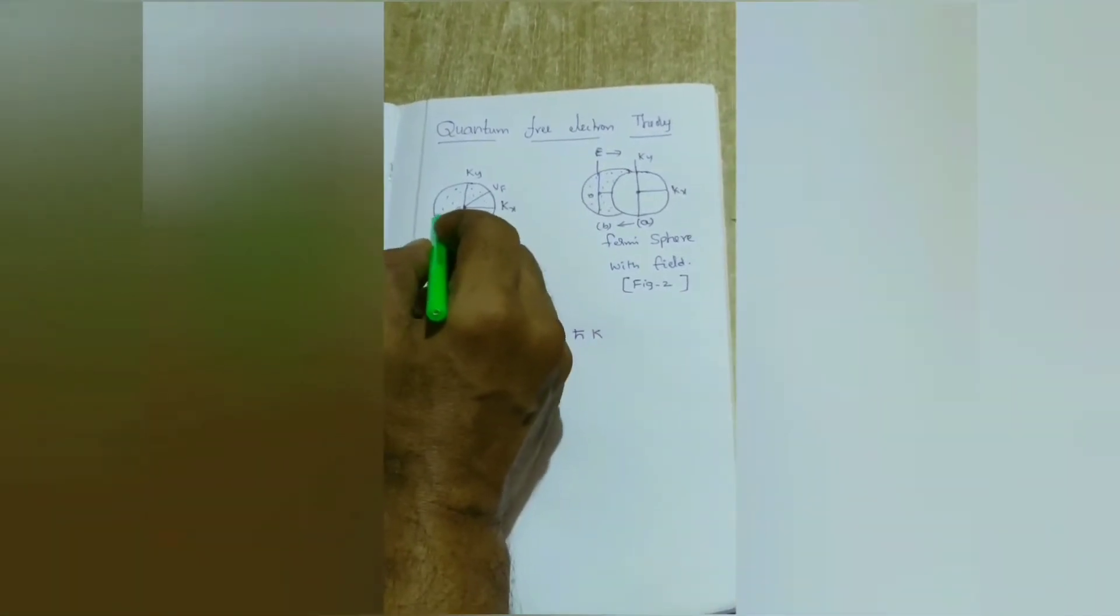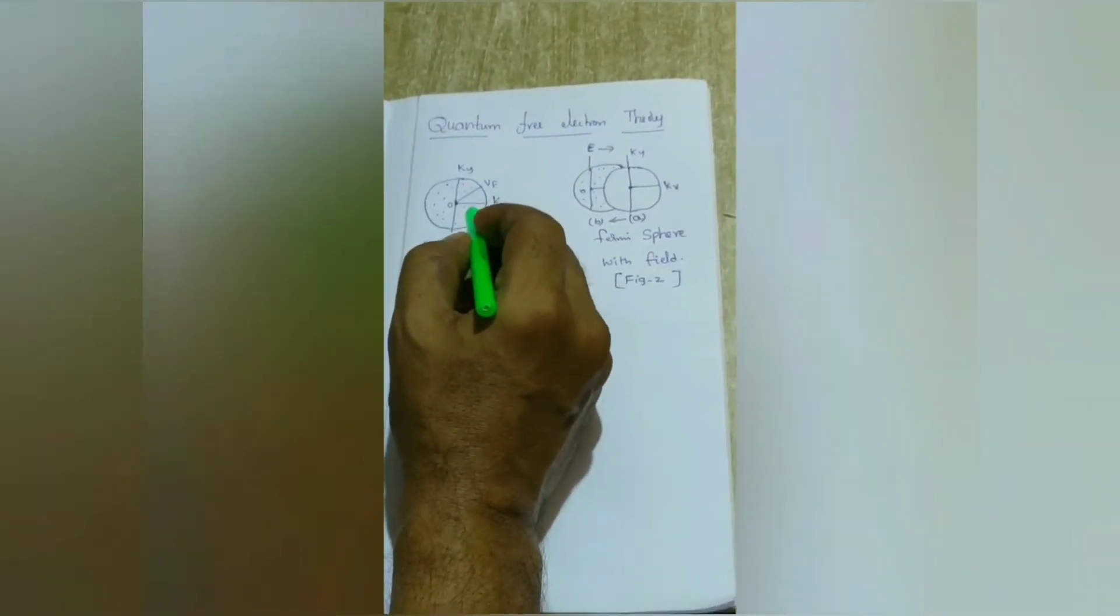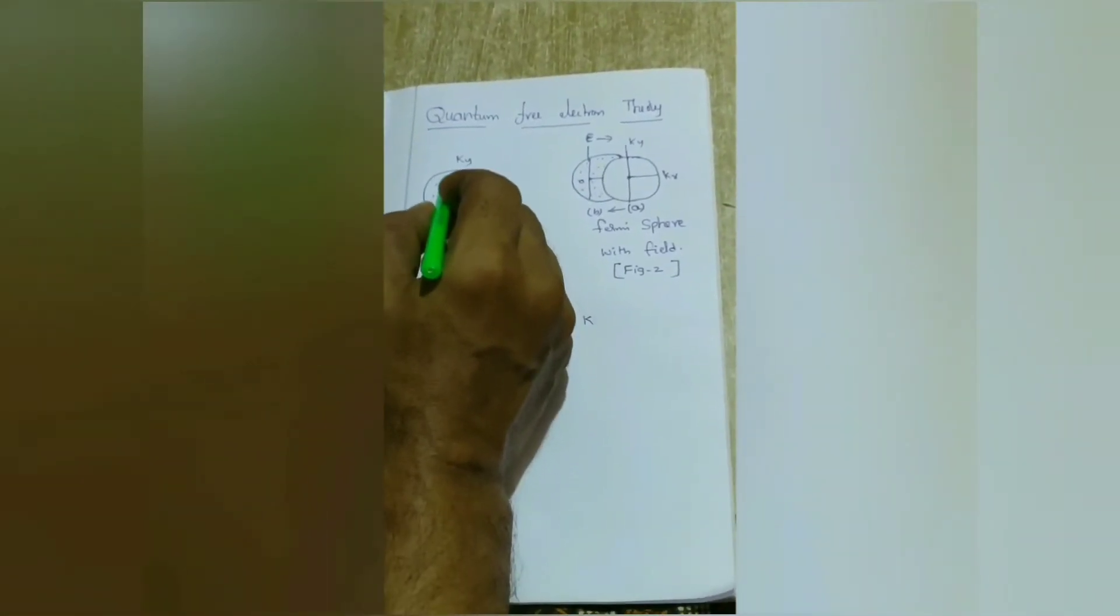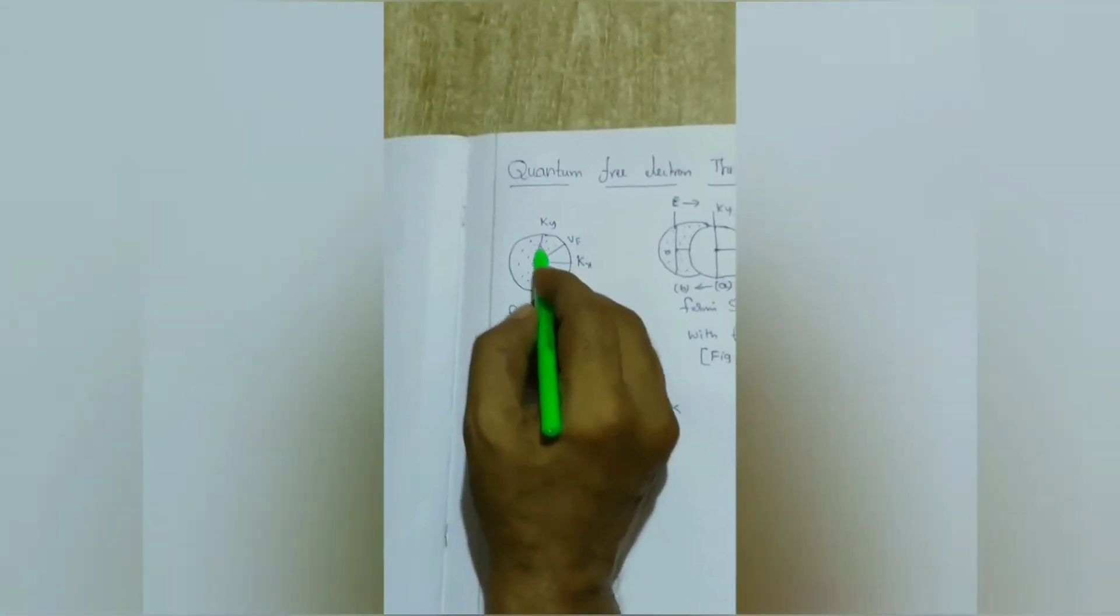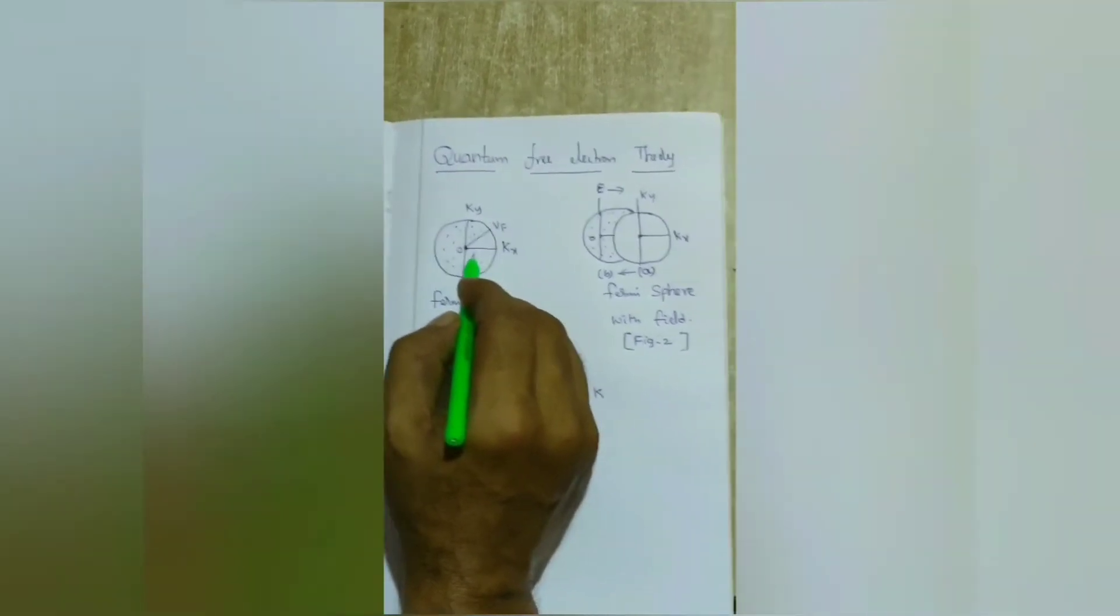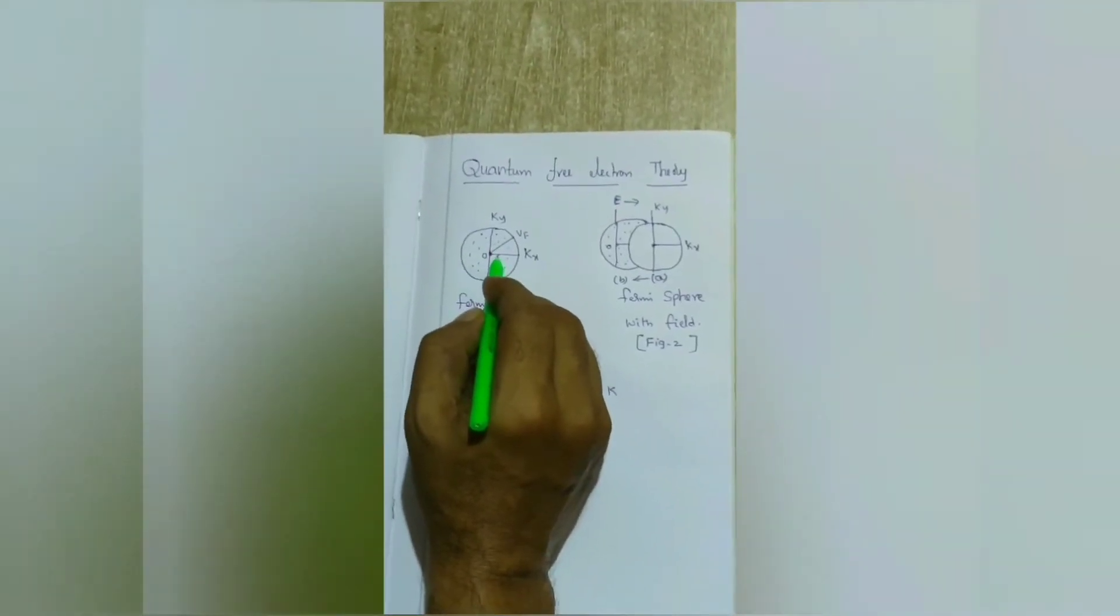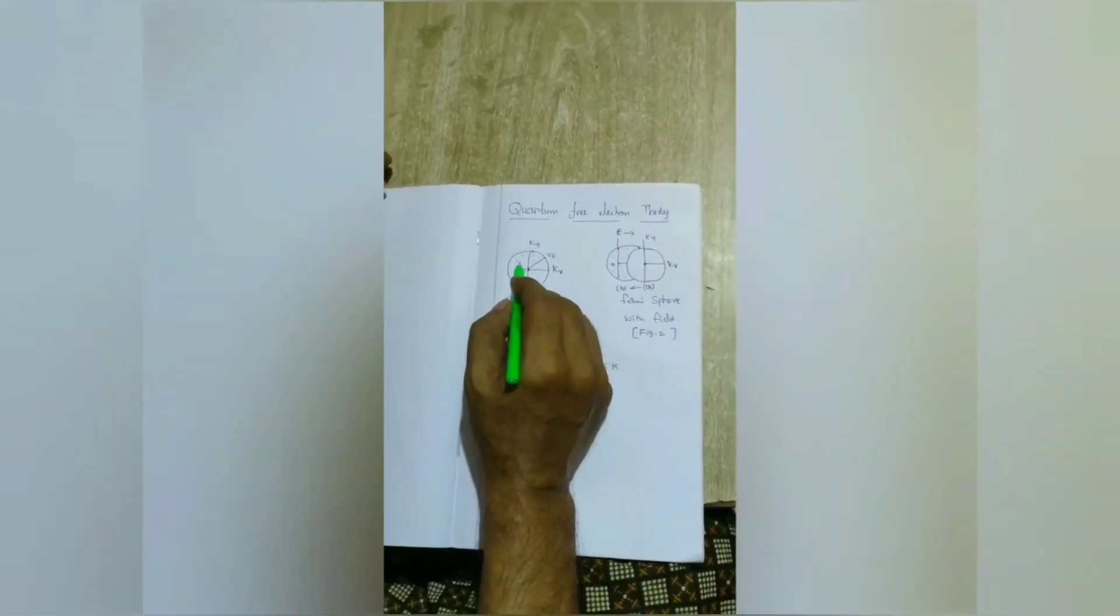This diagram represents Fermi sphere. Inside the sphere, each and every point represents a free electron. Each and every free electron moves in random motion, with same velocity, in all directions.